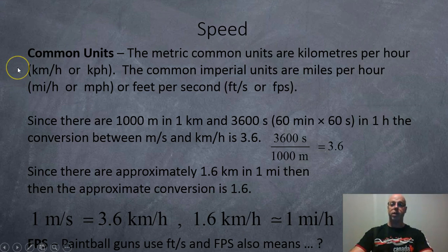Okay, so the common units, the metric common units are kilometers per hour. And the common imperial units used in the United States are miles per hour or feet per second. Now since there are 1,000 meters in 1 kilometer and 3,600 seconds in an hour, 60 minutes by 60 seconds. If we take those numbers, 3,600 divided by 1,000, we get a magic conversion number of 3.6.